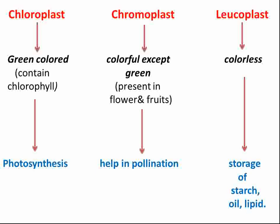The last type of plastid is leucoplast. These are colorless plastids — they do not have any color. Their function includes the storage of starch, oils, lipids, and fats. So leucoplasts help in the storage of starch, oils, lipids, and fats. This covers all types of plastids and their functions.